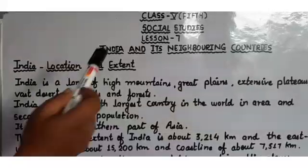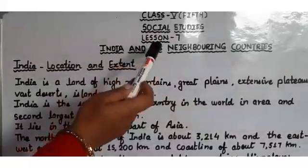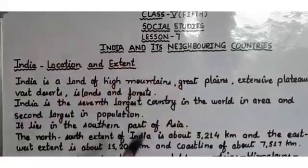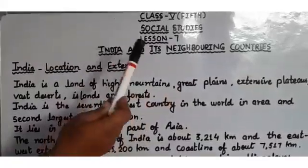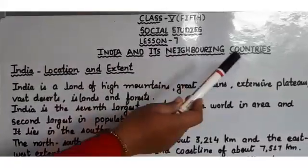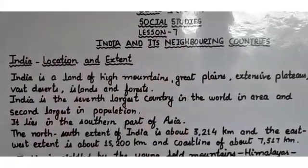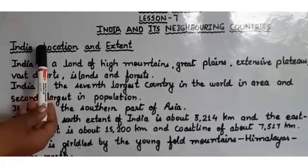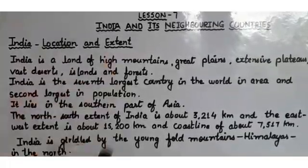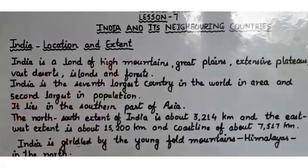Hello my dear students, let's continue our today's class. Class 5, today in your social studies class we will start lesson number 7 - India and its neighboring countries. We will study about the location and extent of India.